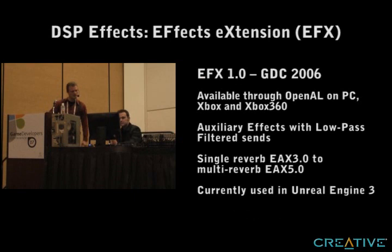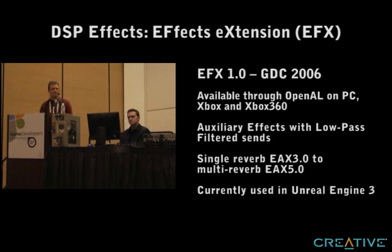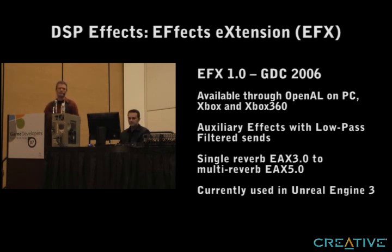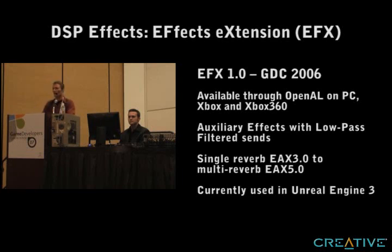Last year we came up with an effects extension, which was the hardware-mixer side of things — handling auxiliary send buses with global effects like reverb that run in hardware. All the sends can be low-pass filtered with second-order filters. It's very flexible and can handle from a single reverb up to multiple reverbs simultaneously, which games like Prey, Quake 4, and Doom 3 support — multi-reverb really adds a lot of ambient character to a game; otherwise it's all dry audio.